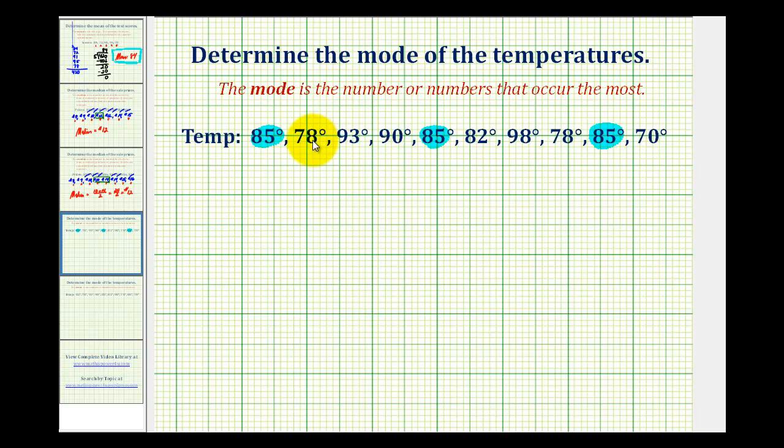If we look at 78 degrees, 78 degrees only occurs twice, and every other temperature only occurs once. So since the temperature of 85 degrees occurs the most, our mode is 85 degrees.